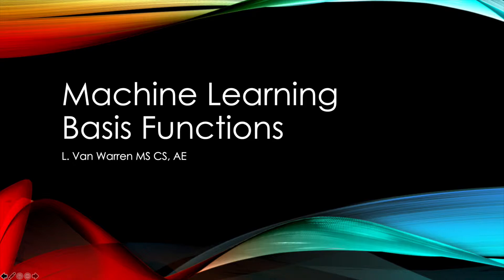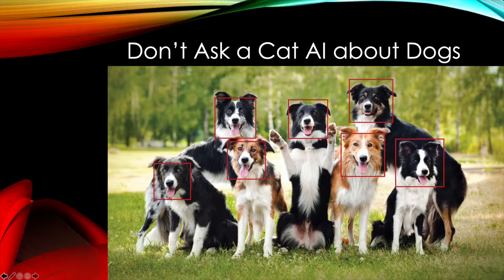I want to talk a little bit now about artificial neurons or machine learning neural networks, and I want to talk about basis functions. Another way of saying that is don't ask a cat AI about dogs, meaning that if we train an AI or a machine learning program to understand cats and we ask it then about a dog, it's not going to know what a dog is because a dog is not in its basis set.